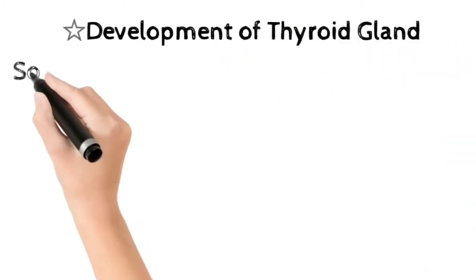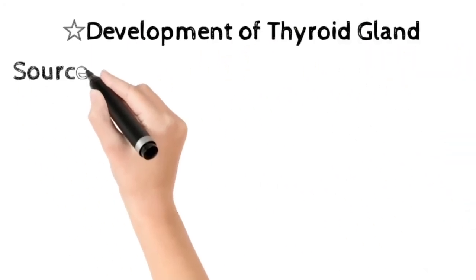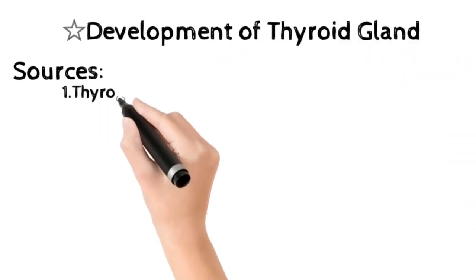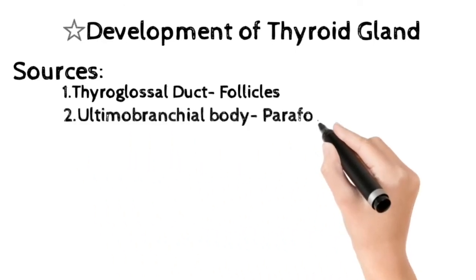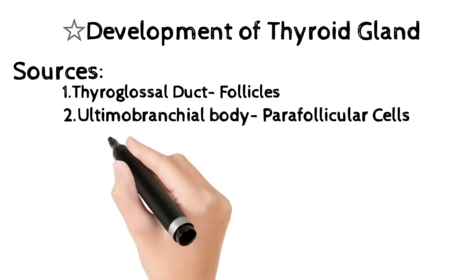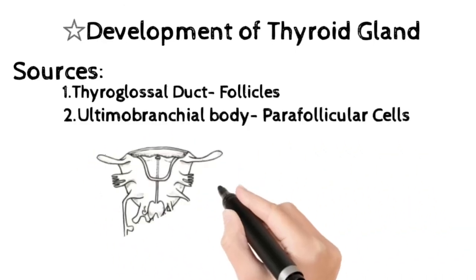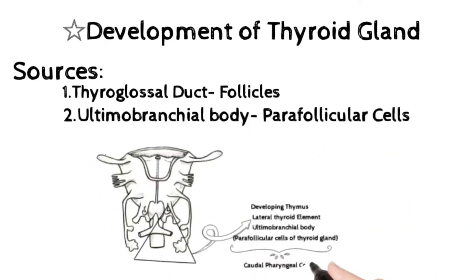Development of thyroid gland. Thyroid gland develops from two sources. First, the thyroglosal duct, which forms the follicular cells of thyroid gland. Second, the ultimobranchial body, which is a component of the caudal pharyngeal complex, forms the parafollicular cells of thyroid gland.